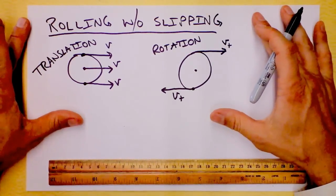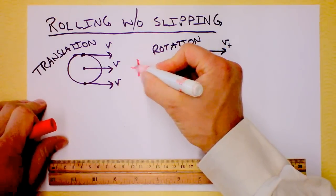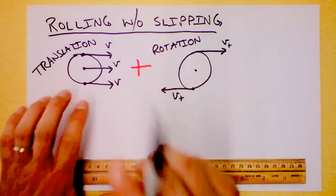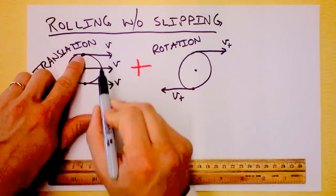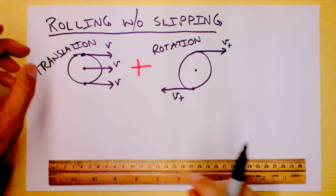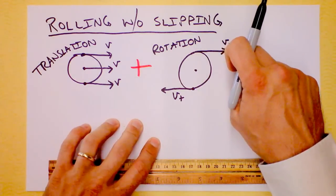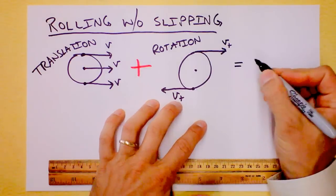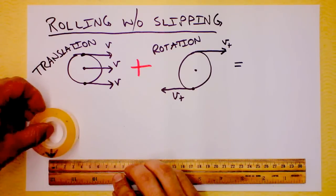But rolling without slipping is a combination of translation and rotation. So what we'll get if we add up all these vectors, let's say, consider the possibility that we can make the speed of the axle, the translation part, exactly equal to the tangential speed. This will be a very interesting thing. I want you to think about what that would look like if we added all those vectors up. So I will actually show you rolling without slipping.